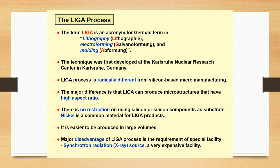LIGA process is radically different from silicon-based micromanufacturing. The major difference is that LIGA can produce microstructures that have high aspect ratios. There is no restriction on using silicon or silicon compounds as substrate. Nickel is a common material for LIGA products, and it is easier to be used in large volumes.